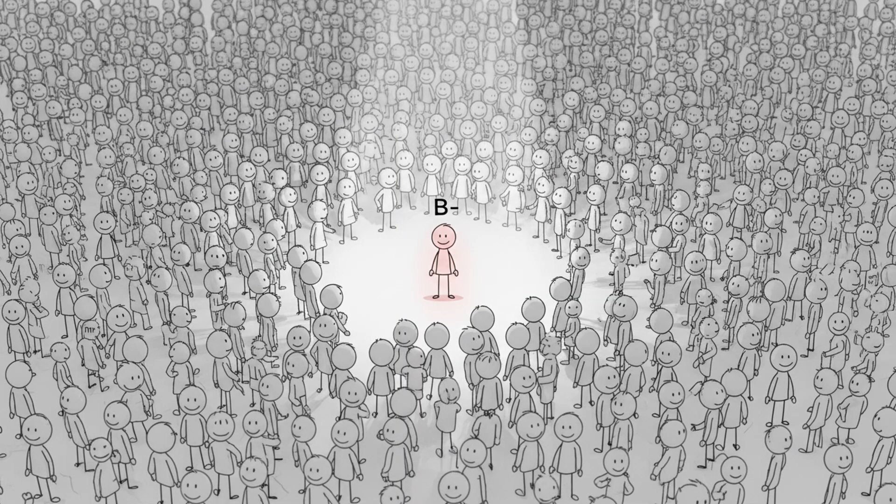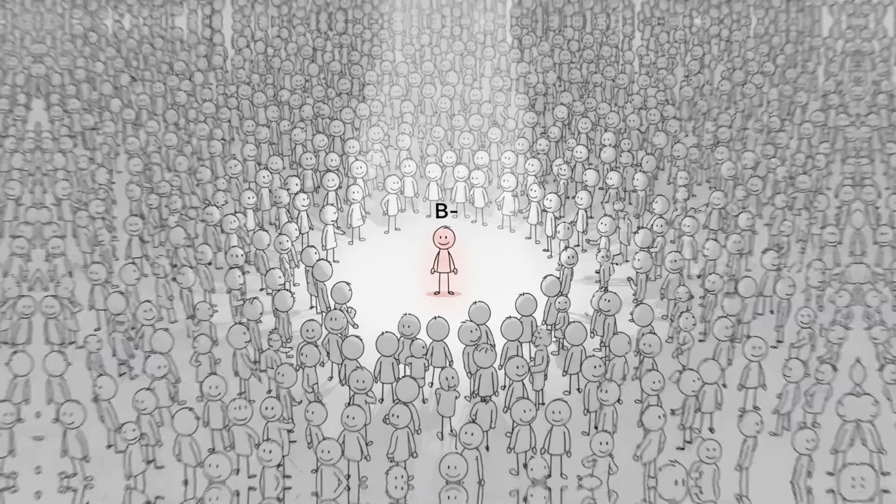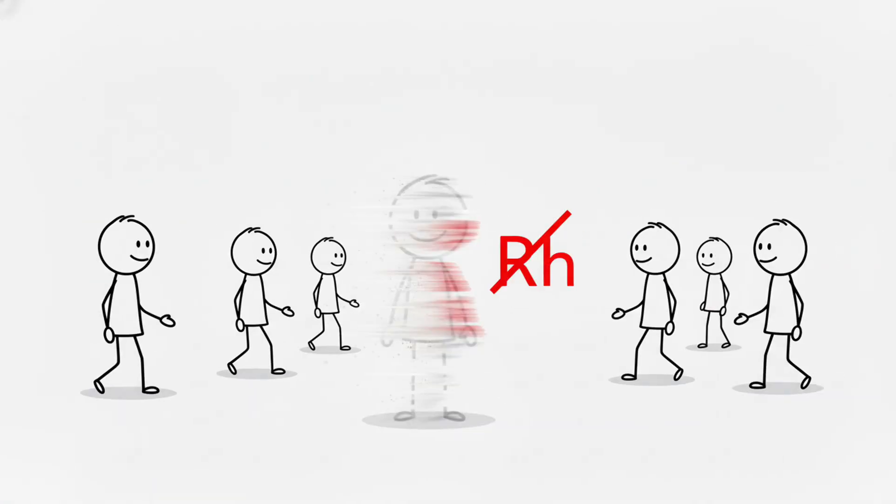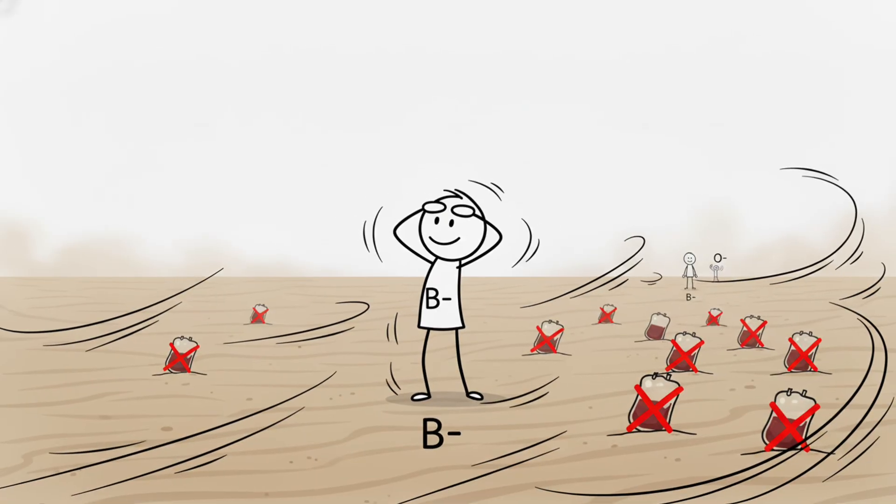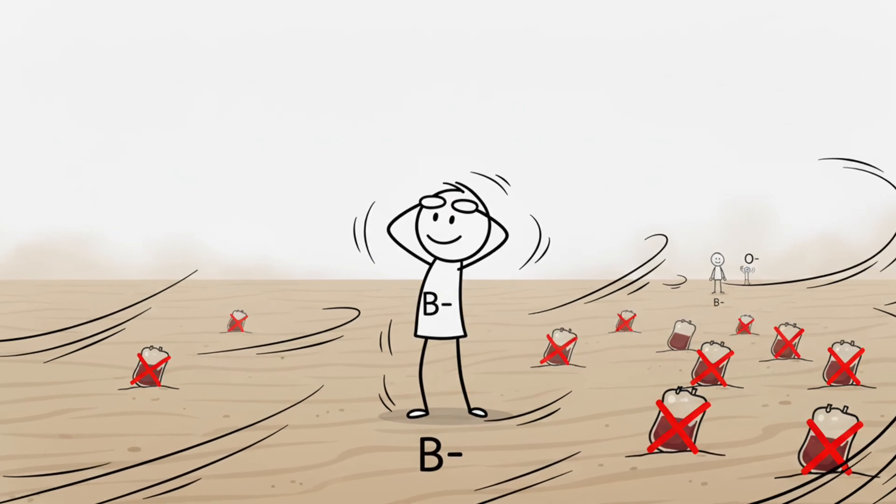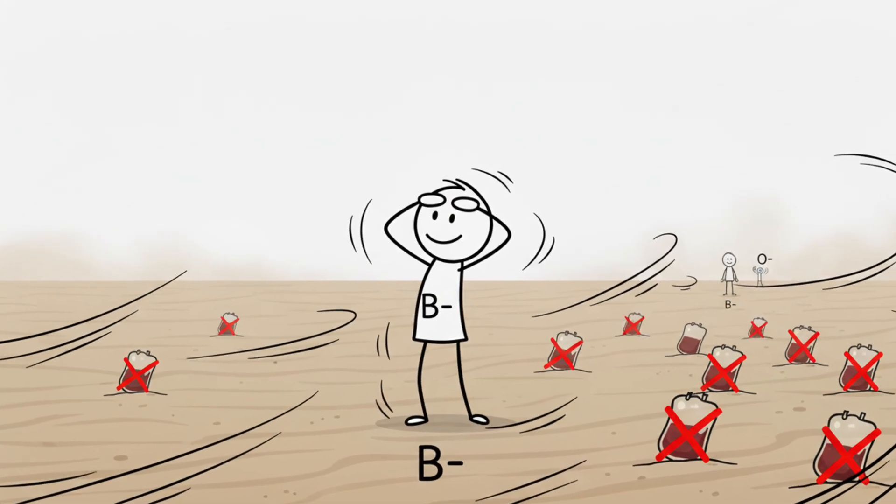B negative. B negative flows through only 1% of humanity. You have the wanderer's blood. But without the RH factor, you're nearly invisible.